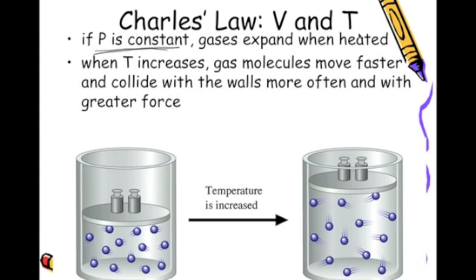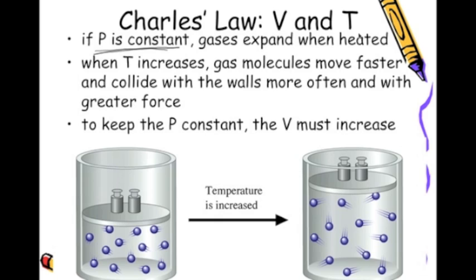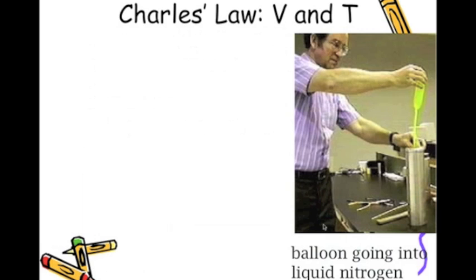When the temperature increases, the gas molecules will move faster and they collide with the walls more often with greater force. So, to keep the pressure constant, the volume must increase. So, we see here that we have a set of molecules going around. We're keeping the pressure the same, and we increase the temperature, and we see that we have to increase the volume. So, we see that these are going to be directly proportional.